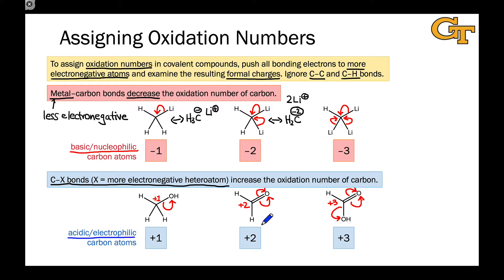such as the carbonyl carbon of formaldehyde, which we see in the middle here. We're familiar with this carbon acting as an electrophile, and the oxidation number provides us with a nice quantitative formalism for thinking about that.